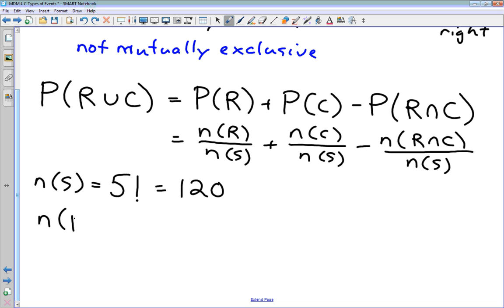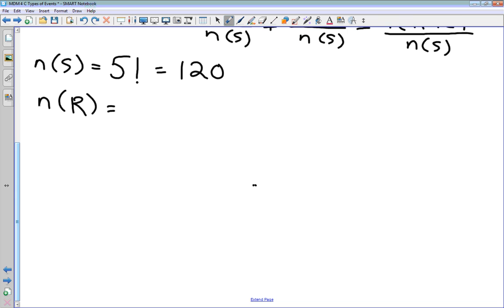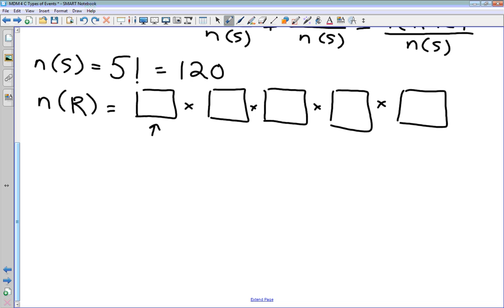What about the number of events where, or the number of arrangements where Rory is on the left? Well, to approach this problem we can use the box method that we used back in unit one. We can have our five spaces here, each one representing a position in our lineup for the photo. And we're going to start over here, on the far left, because we want to put Rory in that position right there. So, there's only one choice for that box right there, and that's going to be Rory.